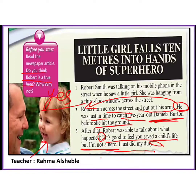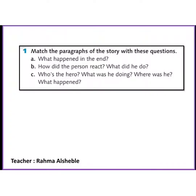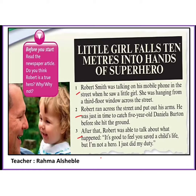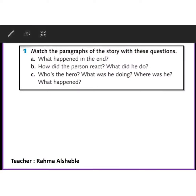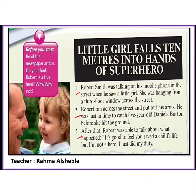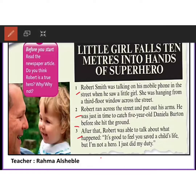Now we've finished the story. Let's read question number one: match the paragraphs of the story with these questions. How many paragraphs do we have? We have three paragraphs. You should match them with three questions. Question one: what happened in the end? Which paragraph tells you what happened in the end? The answer is paragraph three — after reading paragraph three we knew what happened and what Robert said.